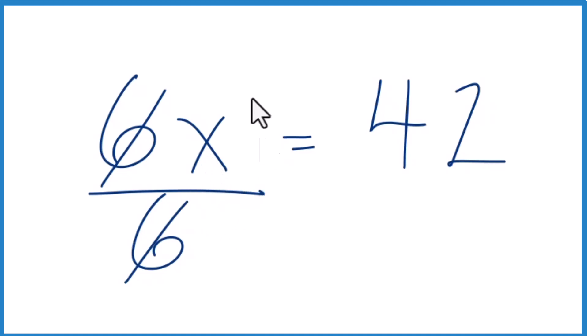But we can't just do that to one side. This is algebra. Whatever you do to one side, you do to the other. So we need to divide 42 by 6 as well. We end up with x equals 42 over 6.